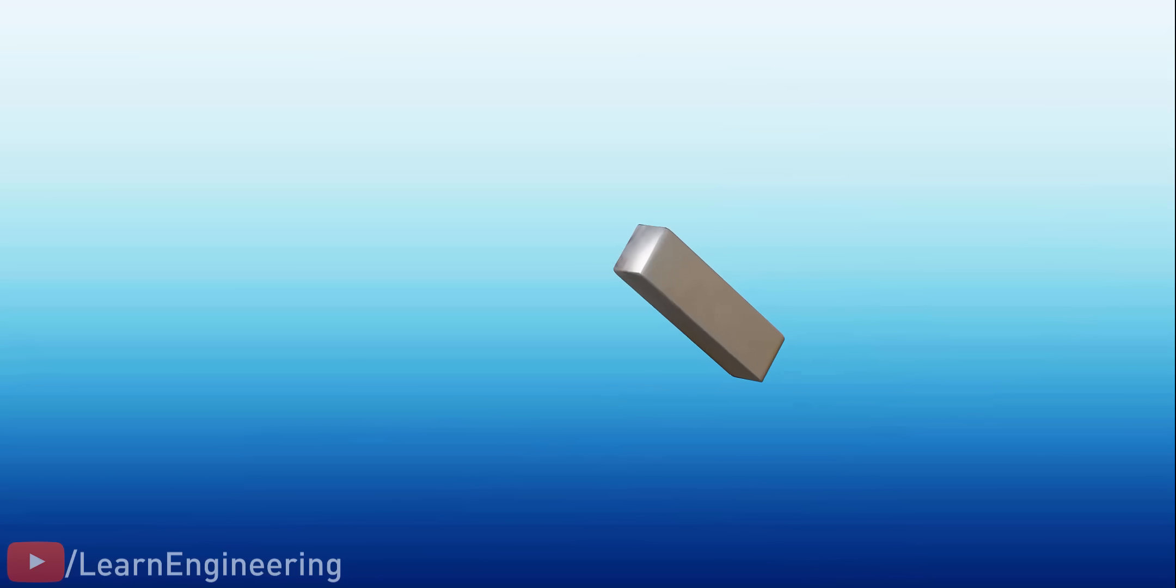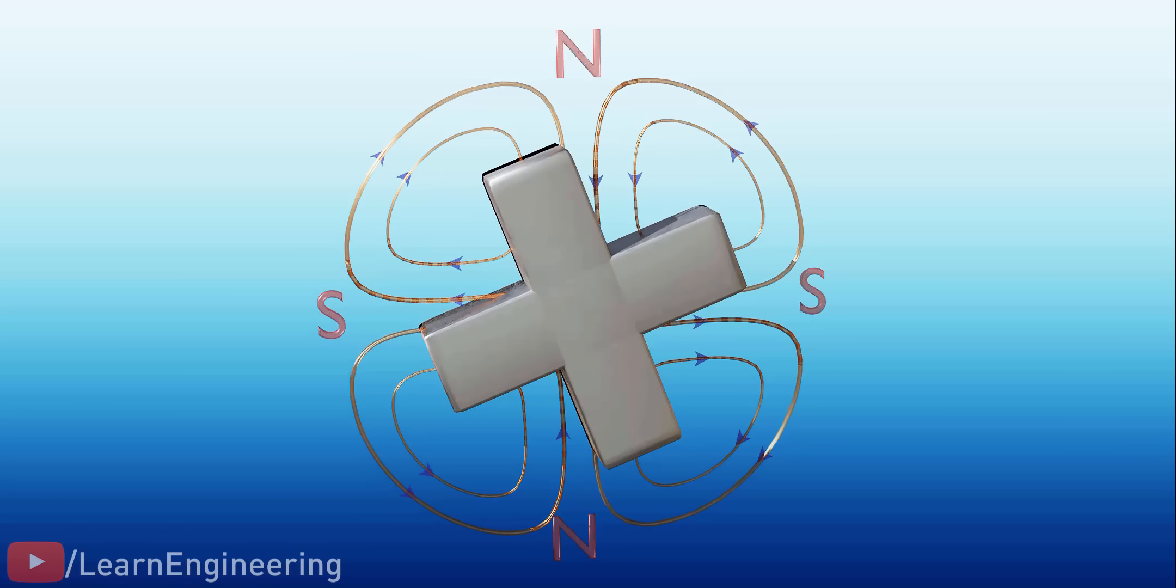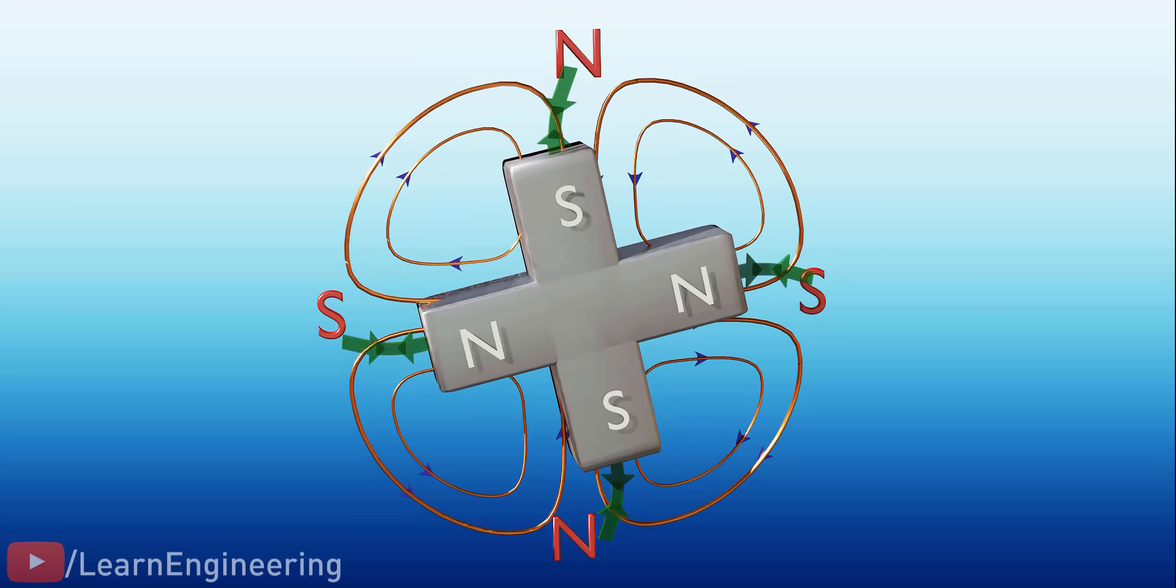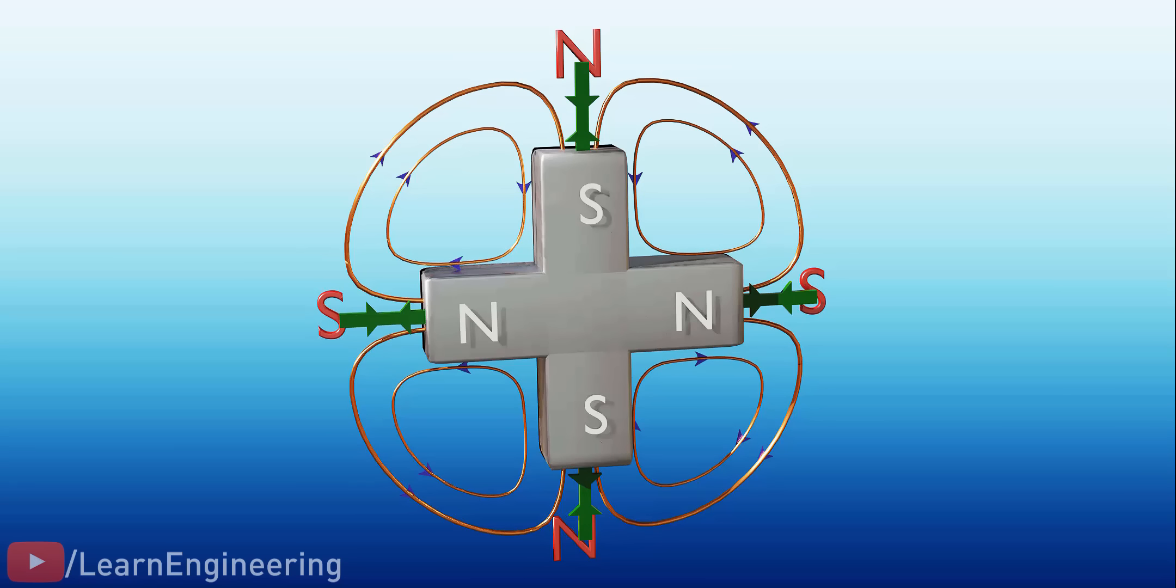Just by adding one more iron bar perpendicularly, we can produce double the amount of torque. Please note such a rotor has to use a four-pole rotating magnetic field.